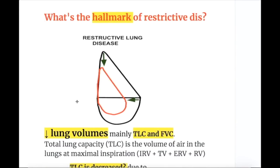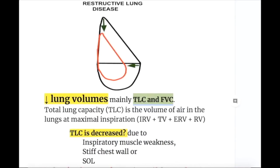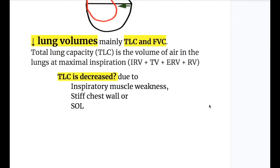The hallmark of restrictive diseases is decreased lung volume, mainly TLC and FVC. All lung volumes are reduced in restrictive disorders but TLC and forced vital capacity are the main ones reduced. TLC includes inspiratory reserve volume, tidal volume, expiratory reserve volume, and residual volume. TLC is decreased due to inspiratory muscle weakness, stiff chest wall, or space-occupying lesions.